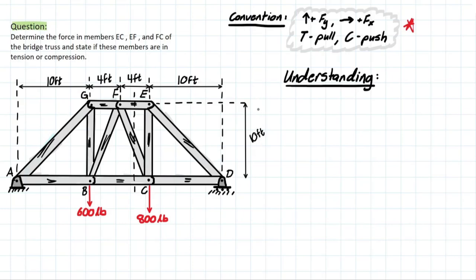Well, the method of sections actually assumes that since the entire structure is in equilibrium, then that means any segment that we take should also be in equilibrium as well.